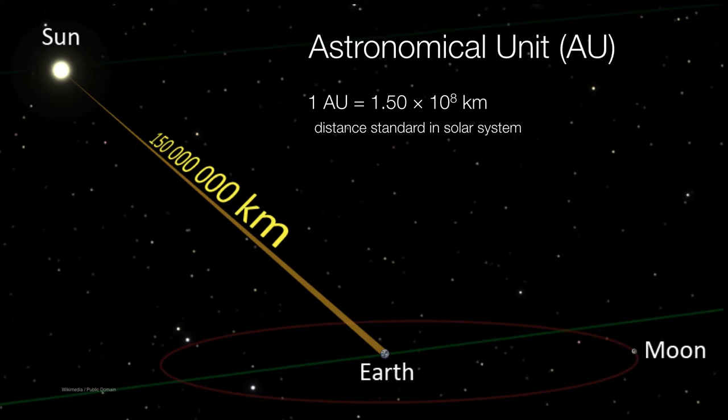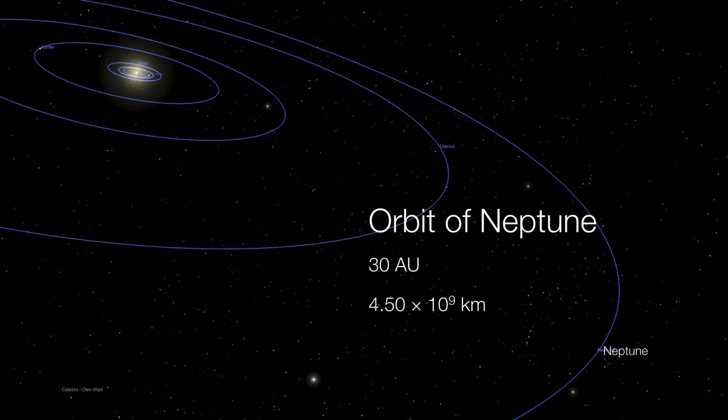This distance is known as the astronomical unit, and it serves as a kind of measurement standard within our solar system. As a matter of fact, we'll step up one more order of magnitude — that takes us out to the orbit of Neptune, which is about 4.5 billion kilometers from the Sun. And you notice we've gone from 1 AU to 30 AU, so we've actually increased an order of magnitude of astronomical units as well.